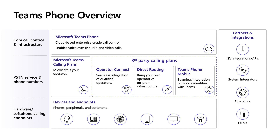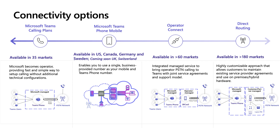The most important thing to know is that you don't have to choose just one of these options. You could use a combination of the four based on your geographical coverage and your users' needs — whether you need to support on-premises or legacy systems. You can really use the combination that best fits what your organization needs in terms of telephony solution and the complexity required. Each of these options, from Teams Calling Plans to Direct Routing, offers a range of customization and flexibility.